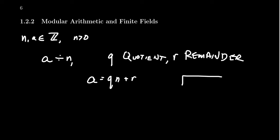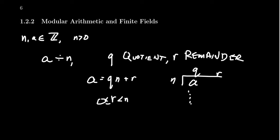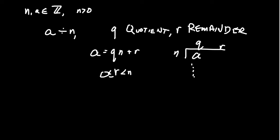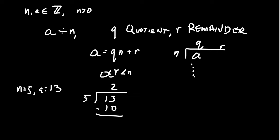When I talk about the division algorithm, I mean: if you take A and divide it by N, you get the quotient Q, and then you get this remainder R. This can be done for any two integers. We also know that the remainder R is going to be less than N, because if it were bigger than N you could keep going. It could be zero if it divides in evenly.